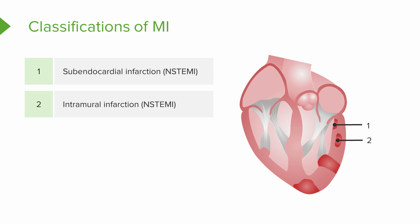The second type is an intramural infarction. This is also an NSTEMI, but look where it's located in the drawing — kind of right in the center. It's not subendocardial and it's not external. It's right there in the middle. That's an intramural infarction.